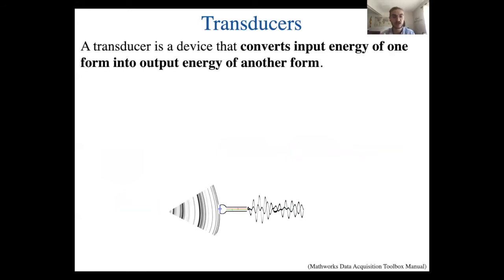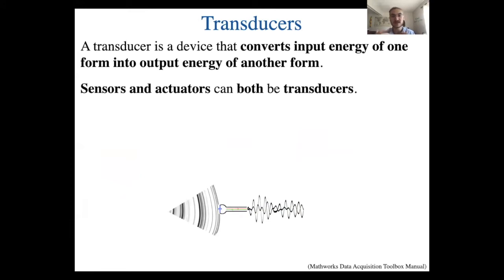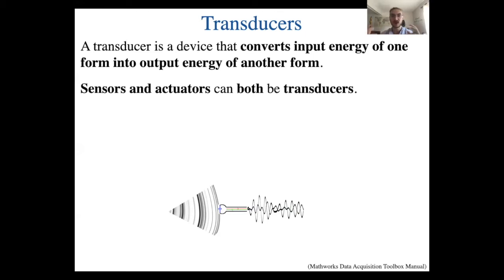Transducers are devices that convert an input energy of some form into an output energy of a different form. Sensors and actuators are both transducers, but they are kind of like the reverse of each other. For example, a microphone is a sensor that converts sound energy in the form of changing air pressure into electrical energy, whereas a speaker is an actuator that converts electrical energy into sound energy. Steve Jobs actually used this principle when he was in high school — he converted the transducers of speakers in his house so that he could use them as microphones and spy on his family everywhere in the house.